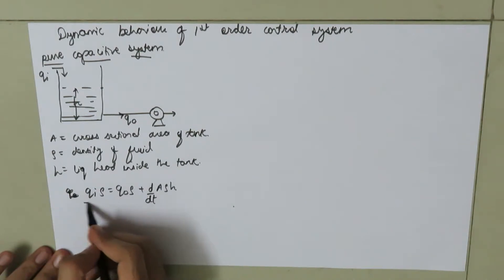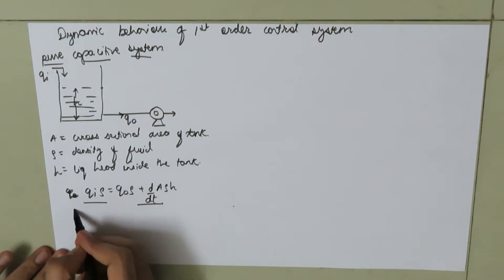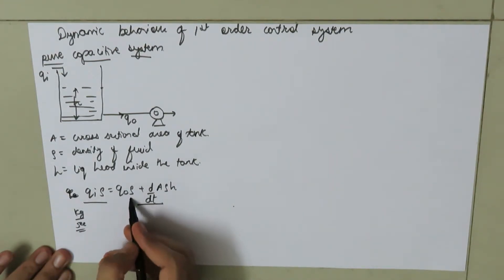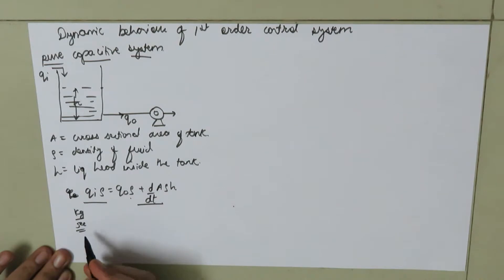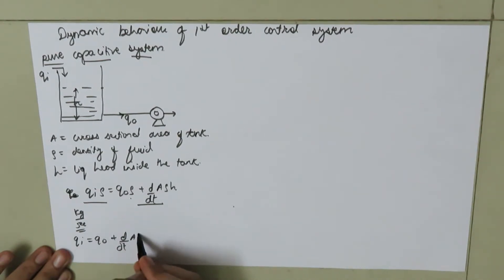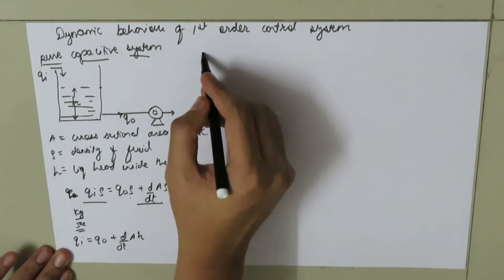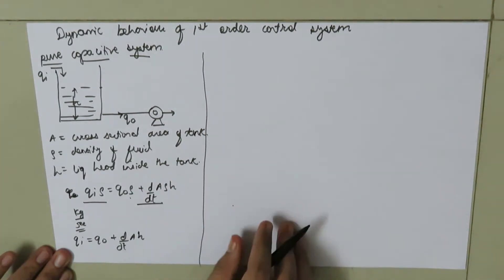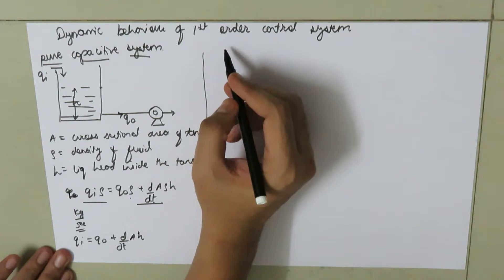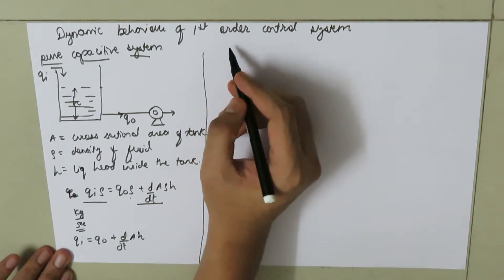If you do the dimensional balance of this equation you get kg per second. Now if the density of the fluid is constant, we can write this equation as: qi equals qo plus d/dt of (A times h). And if the cross-sectional area of the tank is constant, A can be taken out of the derivative sign.